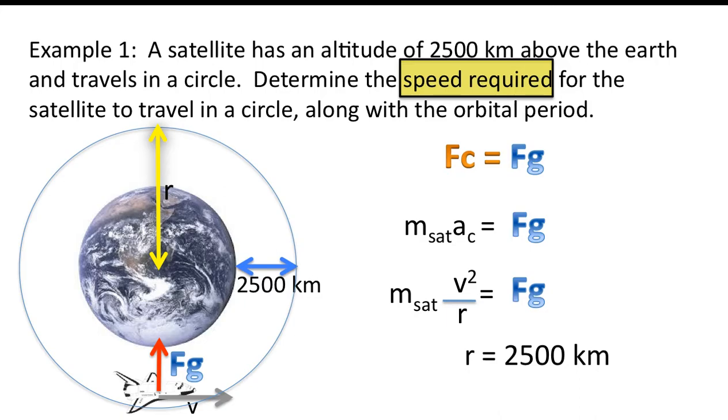Now, this is one of the common errors that students make when writing tests. They start off by saying R is equal to 2,500 kilometers. Now, as you can see from the diagram, that's not what R is. That is what the altitude is. The other mistake, however, is that they leave the unit in kilometers. As we're going to see in a moment, we need the unit in meters. So, this is incorrect.